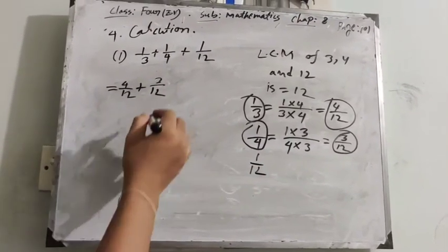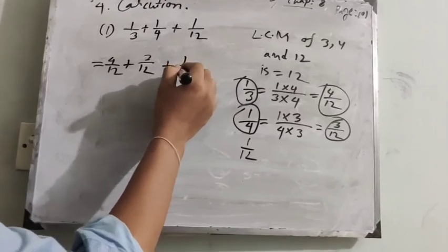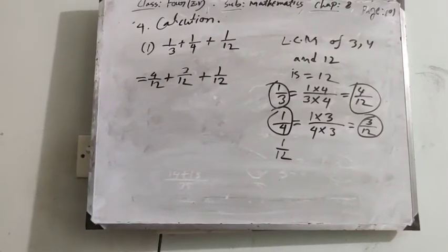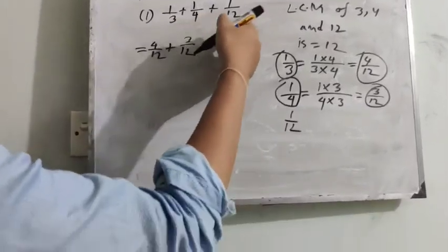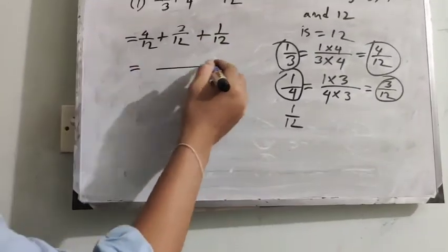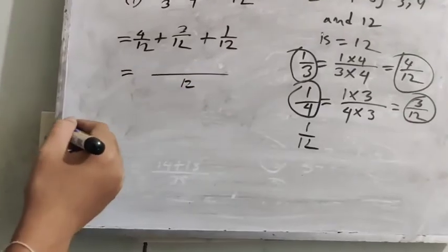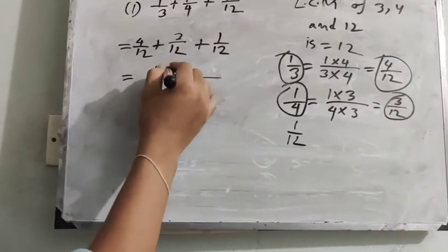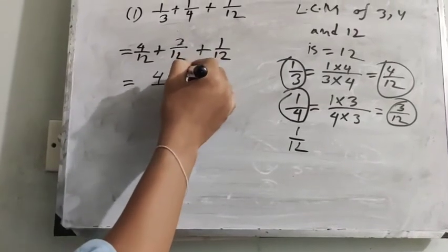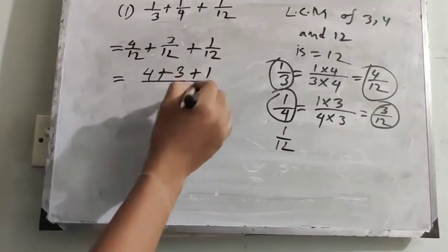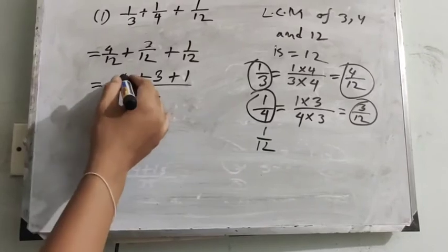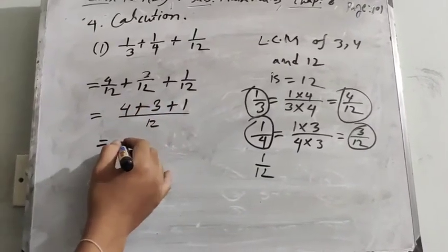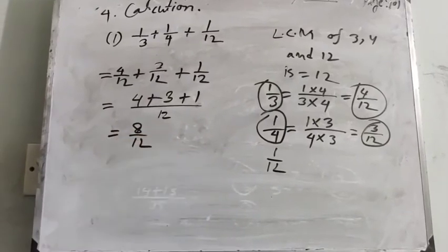We can write 1/12 as the third fraction because 12 is the LCM of 3, 4, and 12. The LCM is 12. So 4 plus 3 plus 1 equals 8, giving us 8/12.